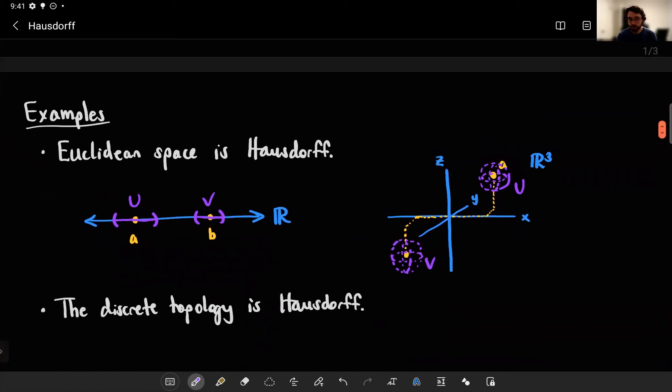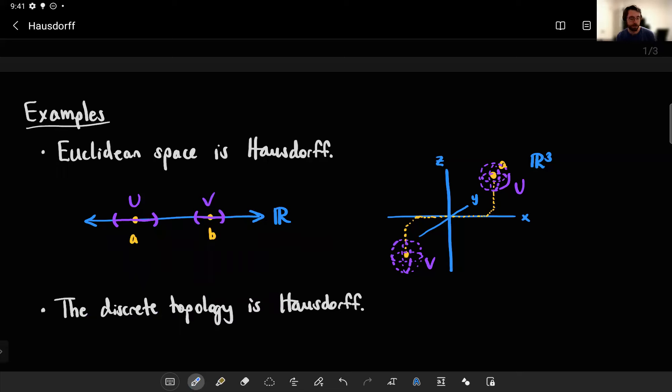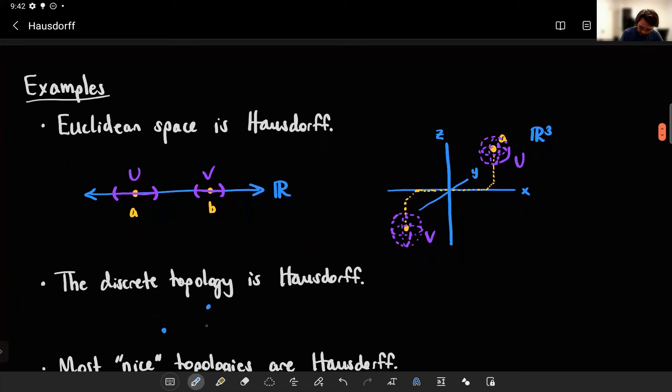You can also see that the discrete topology on whatever set you want to define is Hausdorff. The discrete topology, remember, is the topology for which all subsets are open. And so, if you have a bunch of points existing in your space, and you declare it has the discrete topology, then not only is every possible subset open, but every singleton is open.